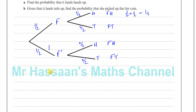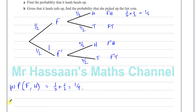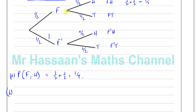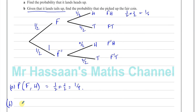The probability it lands heads up is the probability of fair coin and head, which is one half times one half, which is one quarter. So the answer to part A is one quarter. Then for part B, given that it lands tails up, find the probability that she picked the fair coin. This is a conditional probability: the probability she picked the fair coin given that it lands tails up.